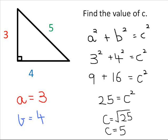So to find C, we find the square root of 25, which is 5. Therefore, C is equal to 5.